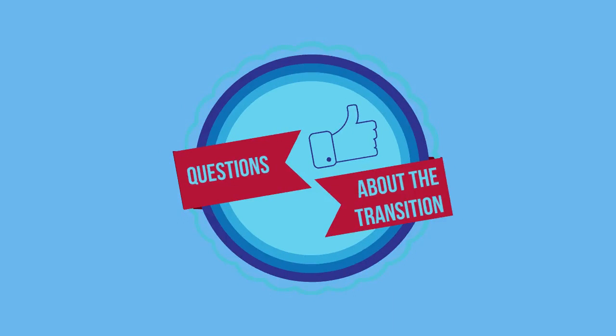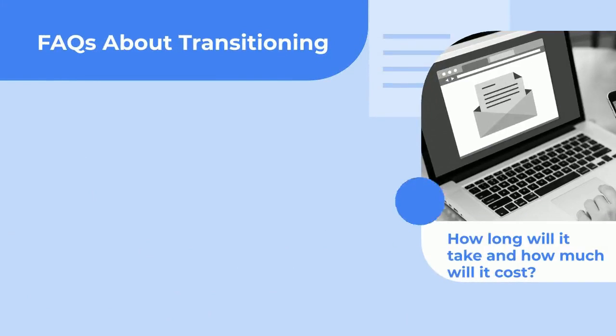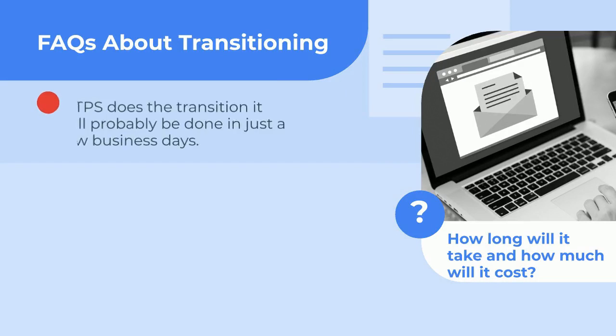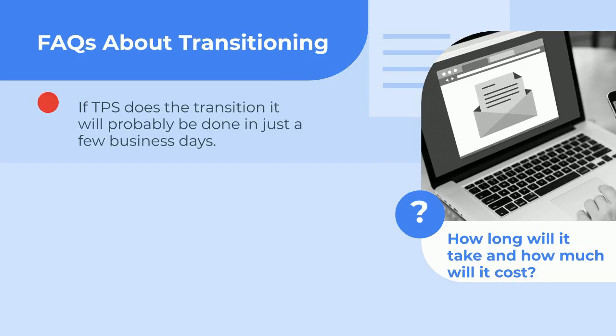Some of the questions we're commonly asked about transitioning from on-premise to Cloud Access are: how long will it take to transition and how much will it cost? If you use our conversion service, it shouldn't take long at all — it can be done in just a few business days, depending on the amount of information and how busy the transition team is at the time.